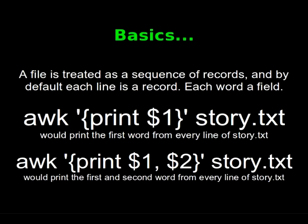What's that doing? Well, this would print the first word from every line of story.txt to the screen. If we look at the second command on the screen, AWK print $1, $2 from story.txt — that would print the first and second word from every line of story.txt, and if we put a comma between the values, it actually puts a space between the words when it displays them to the screen.